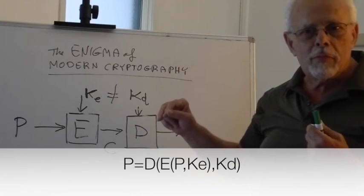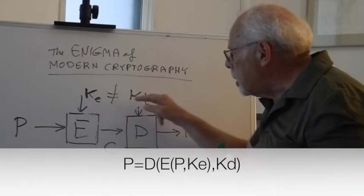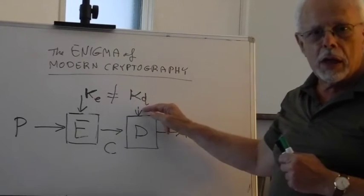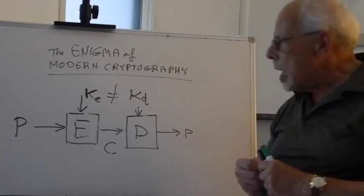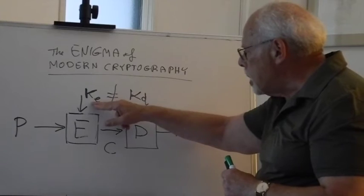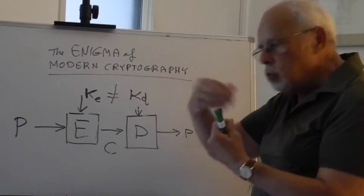And asymmetric encryption was born: the idea of having two keys, one is neutralizing what the other does, but they are different.